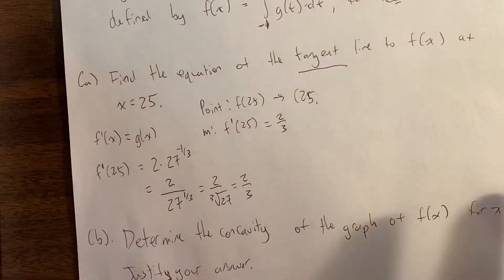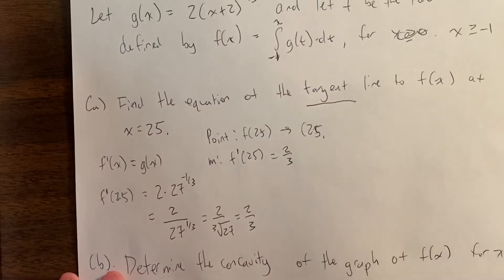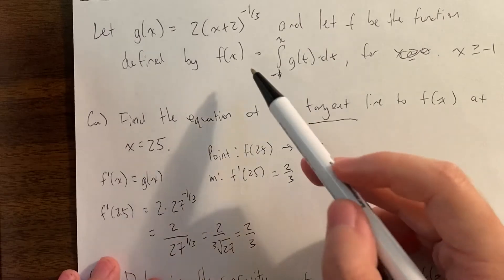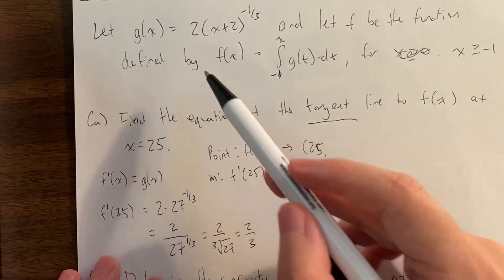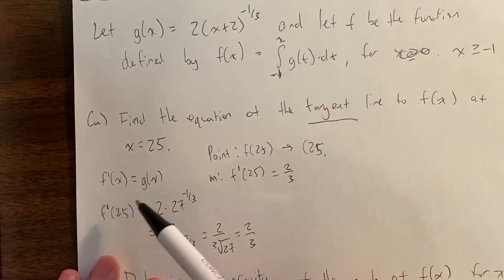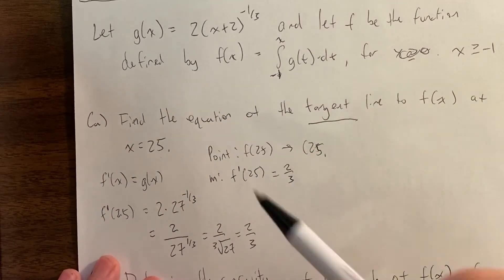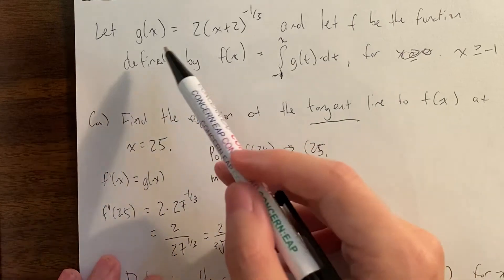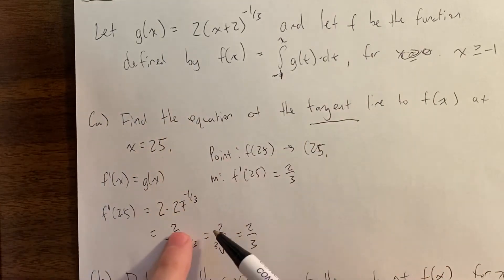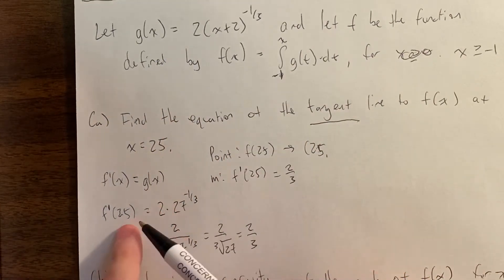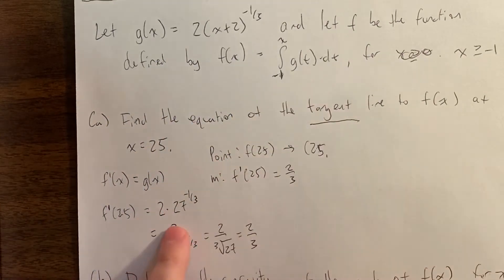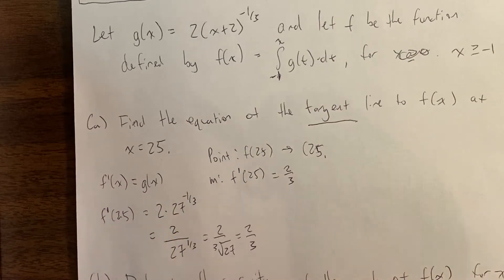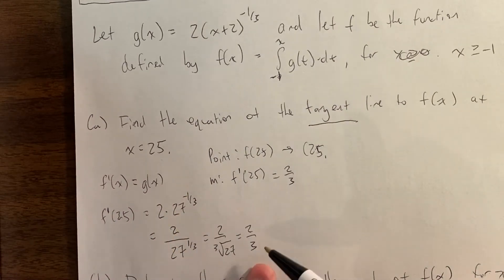So again, this was just the derivative — we actually didn't have to take a traditional derivative because f prime itself is equal to g of x. All we did was plug in 25 and work with this negative fractional exponent, and we got two-thirds in the end.